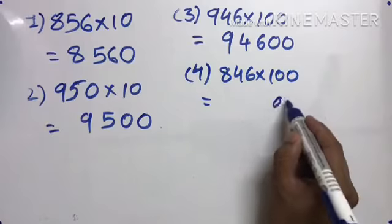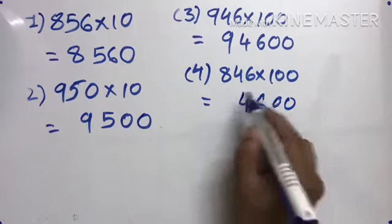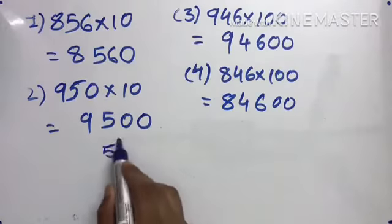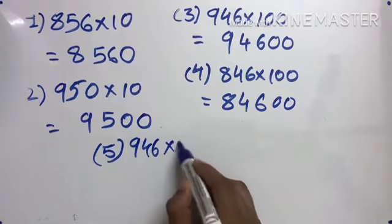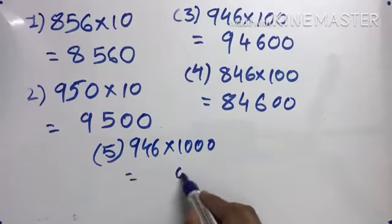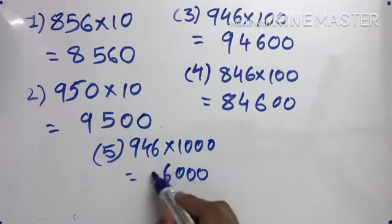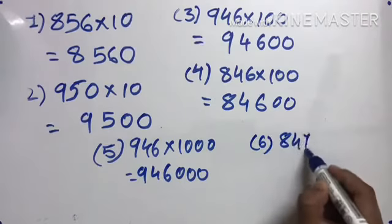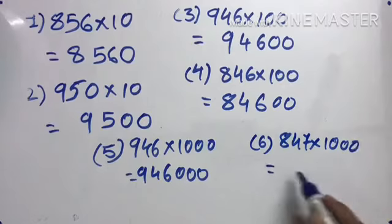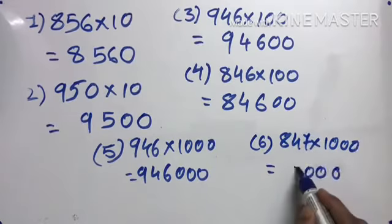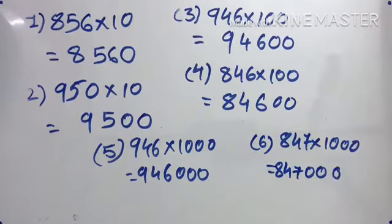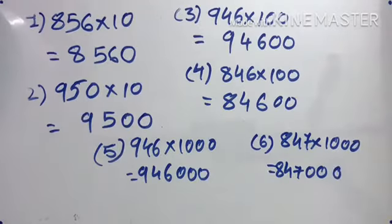So how many zeros? Two zeros. Then 1 times 6 is 6, 1 times 4 is 4, and 1 times 8 is 8. Done. Same thing. This is how we perform multiplication by 10, 100, and 1000.